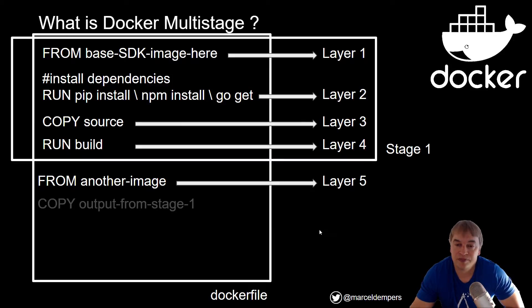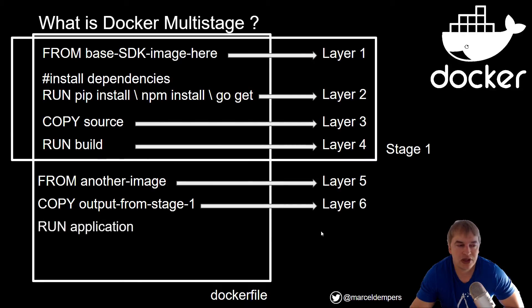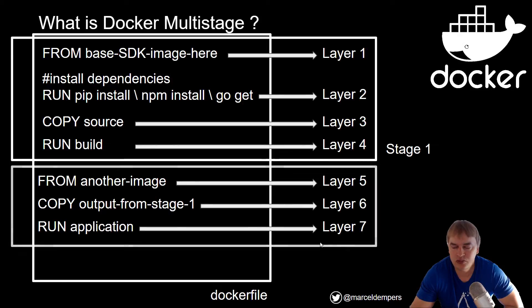That trimmed image becomes layer five. Then we use a COPY command to copy build artifacts from stage one into this new layer, giving us layer six. A RUN or ENTRYPOINT statement to start the application becomes layer seven. We can include debugging tools and expose debug ports in the dev stage without them ending up in the production image. This stage is defined as prod, giving us a multi-stage image with stage one as dev and stage two as prod.